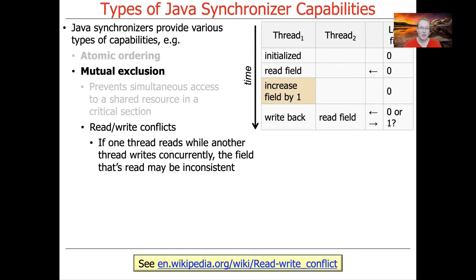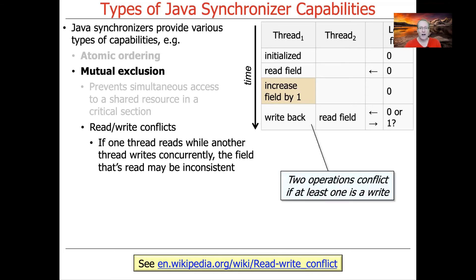Some examples of what happens without mutual exclusion include read-write conflicts. If two threads — thread one and thread two — share a long field starting at zero, thread one reads it, increments it by one, and writes it back, while at the same time thread two is reading from that field. The question is: does thread two read zero, one, or some random inconsistent value in between? Without synchronization, you don't know — it's non-deterministic and a bug. Two operations conflict if at least one of them is a write updating shared mutable state.